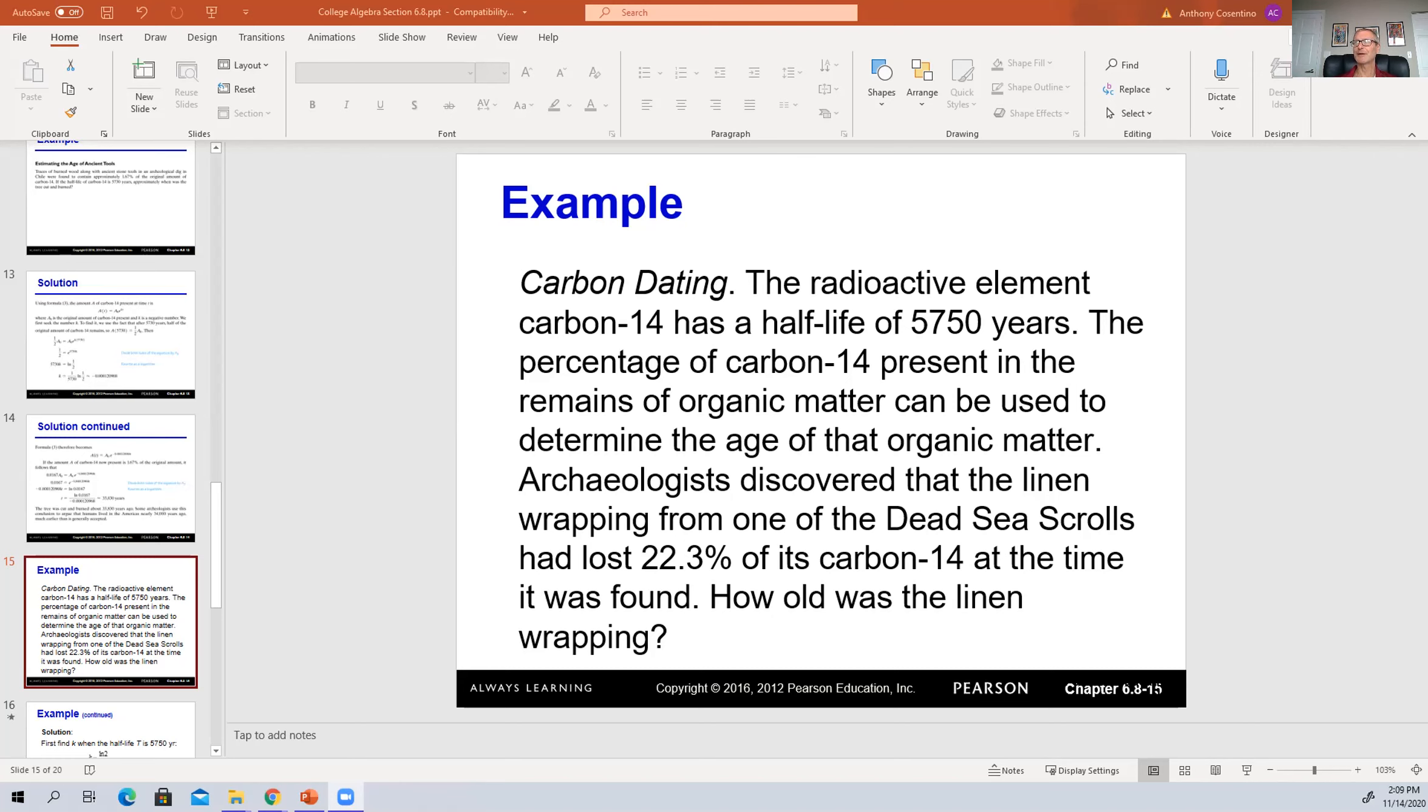But the first thing that we need to calculate is the K value. So if we pull up the whiteboard again, we have A(t) equals A₀e^(kt). Now the only difference between the growth and decay is the K value. And this time since we have decay, the K value is going to be negative.